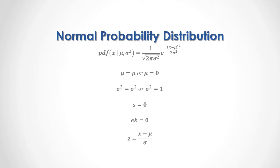Continuous random variable standardization is calculated as follows: it is equal to x — the corresponding continuous random variable — minus mu, which is its arithmetic mean, and we divide that result by sigma, which is the standard deviation.